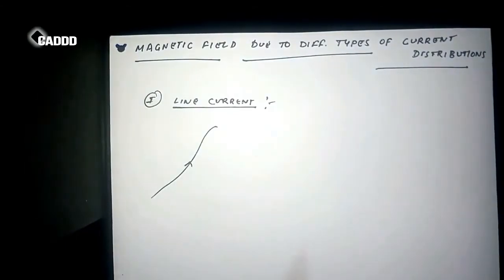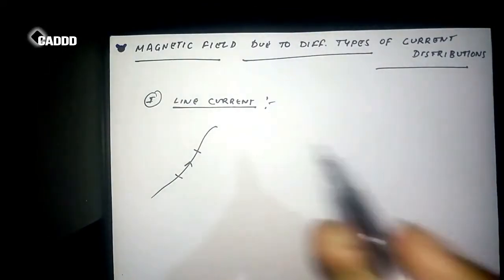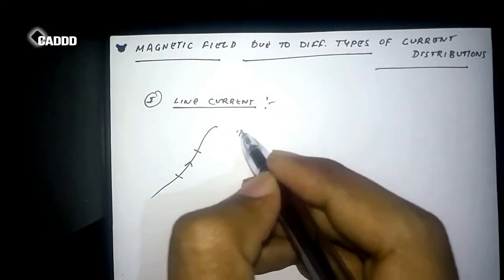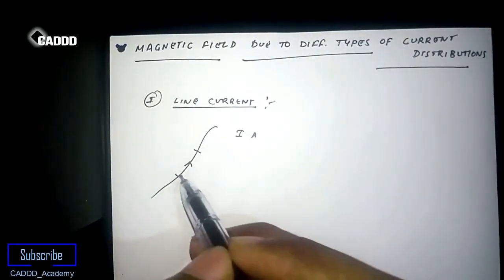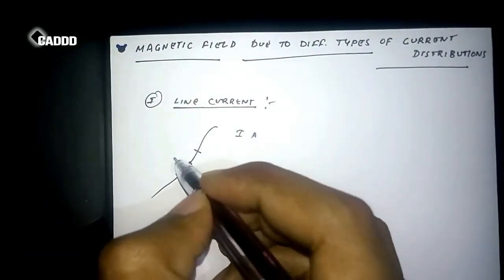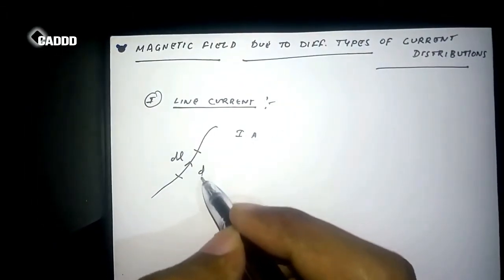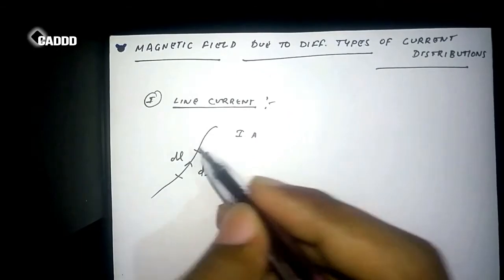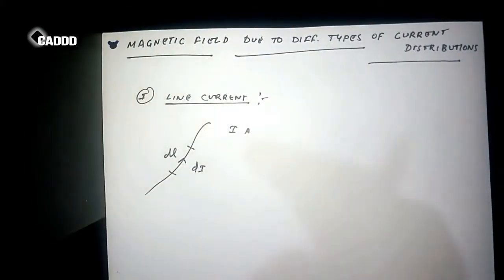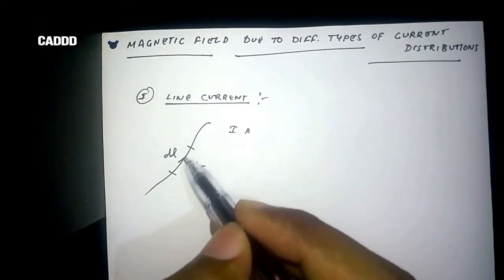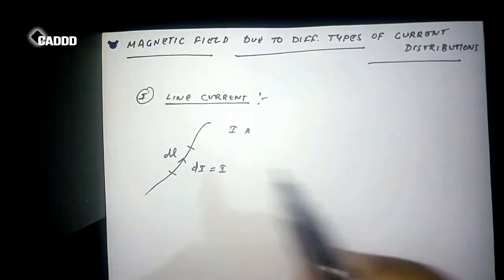Let's say this is the conductor, and it is carrying a current of I amperes. Let's take a small amount of length which is dL, and the small amount of current passing through this dL length is di. But this thing is all in series, so this di will be same as I, because the current passing here, here, here, all will be equal to I.